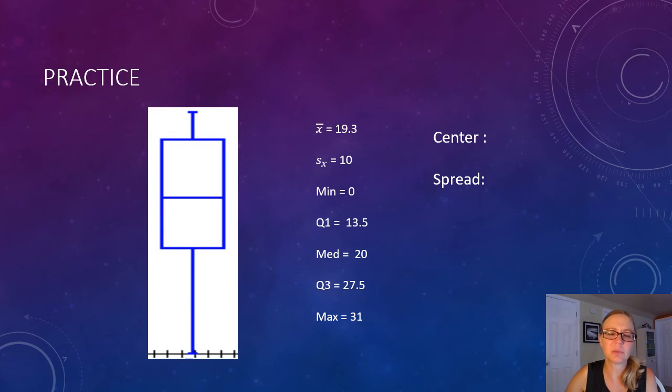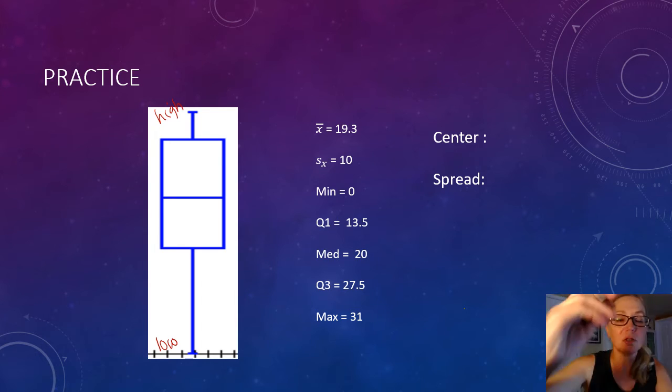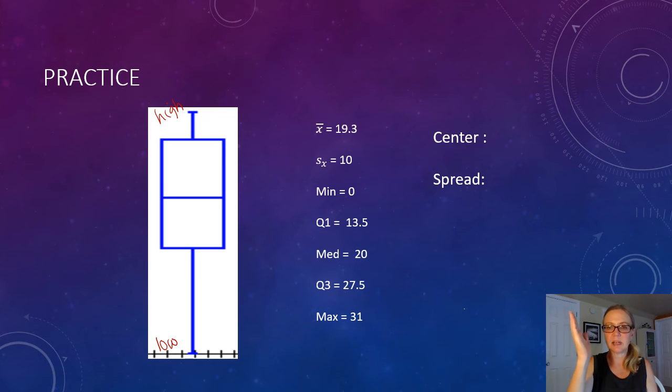Now, I turned this box plot on its side just because you can draw them this way. When they do this, please realize that this is the low side and this is the high side. So if you want to rotate that box plot down, you need to rotate it like that, so clockwise. So you want to rotate it down so the high is on the right.